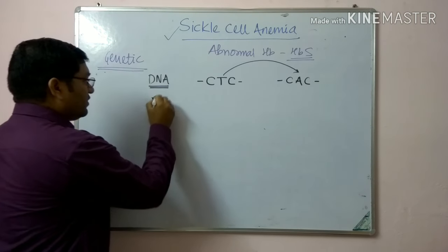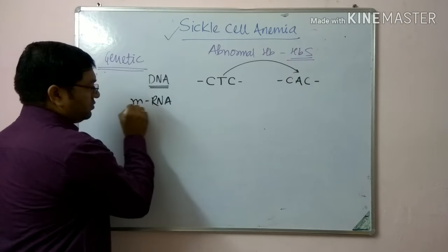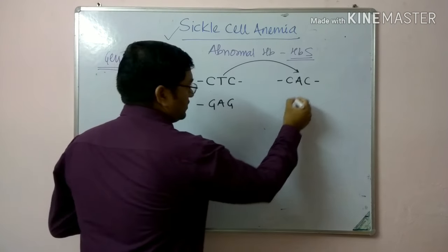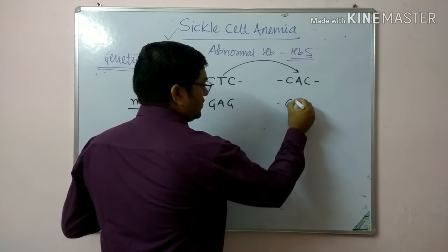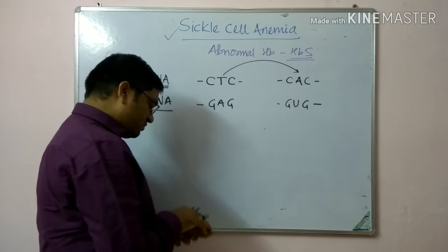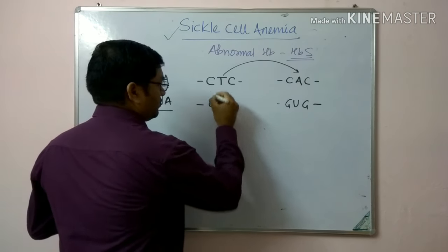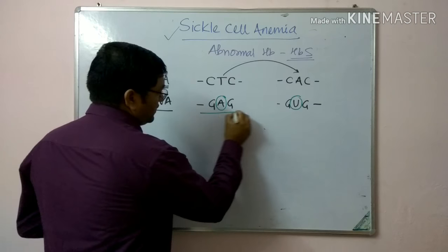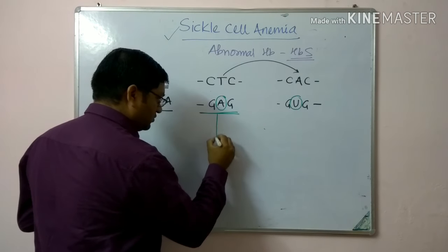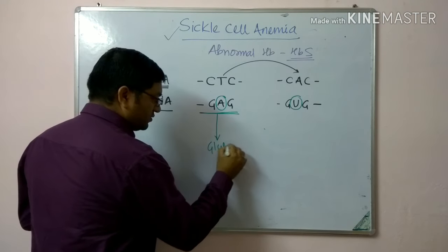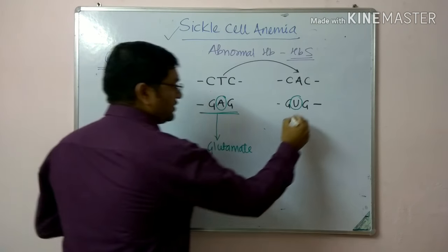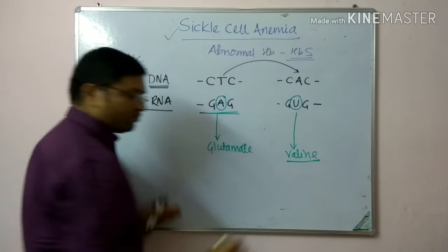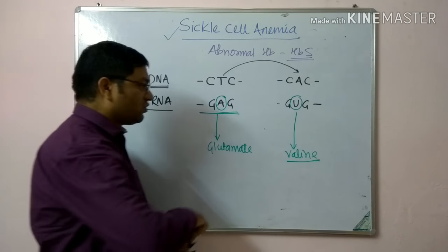At the mRNA level, the normal GAG codon becomes GUG in hemoglobin S, due to the replacement of adenine by uracil in the mRNA. The codon GAG codes for the amino acid glutamate, while GUG codes for valine.